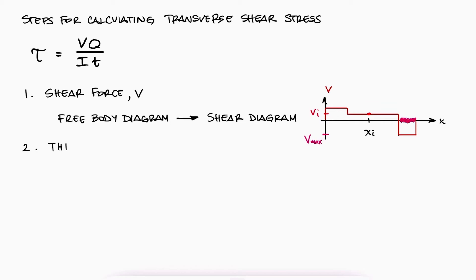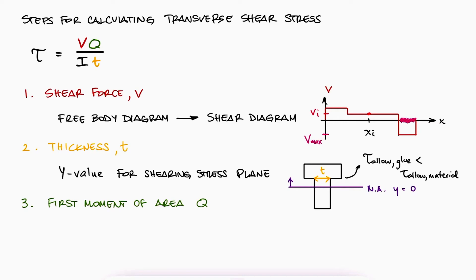The thickness t will depend on the y location of the horizontal plane when looking at the cross-section area. Locations of interest can be glued, soldered, or even welded surfaces, since the maximum allowable stress properties there would be different and usually lower than the rest of the material.